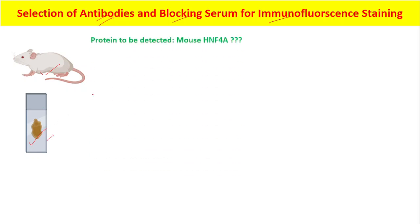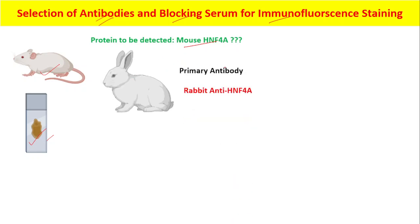Let's say that the protein we want to detect is mouse HNF4-alpha. The primary antibody that we will use is anti-HNF4-alpha, because we want to detect HNF4-alpha protein. Therefore, our primary antibody should be against HNF4-alpha.